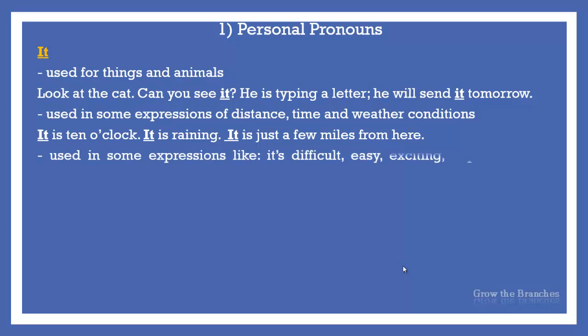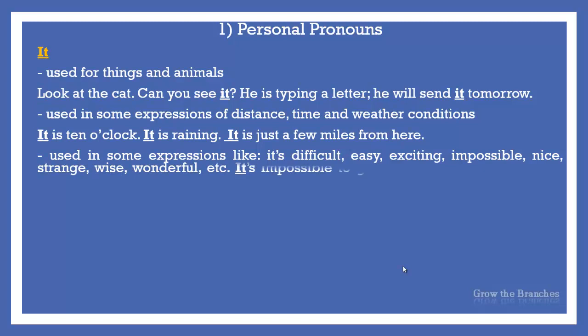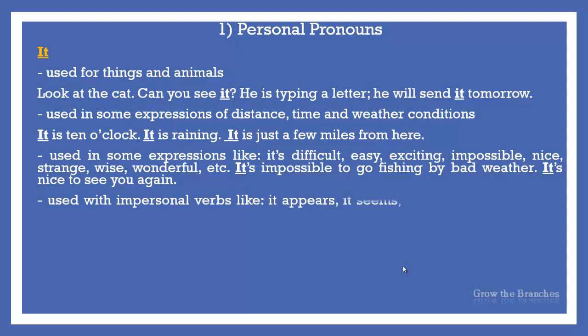It is used in some expressions like it is difficult, it is easy, exciting, impossible, nice, strange, wise, wonderful, etc. For example: It's impossible to go fishing in bad weather. It's nice to see you again. It is also used with impersonal verbs like it appears, it sounds. For example: It says here that smoking is forbidden.